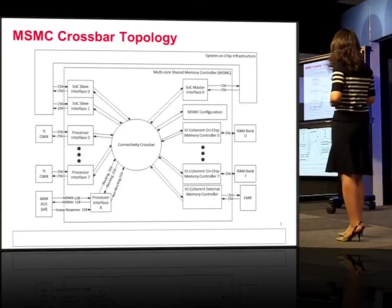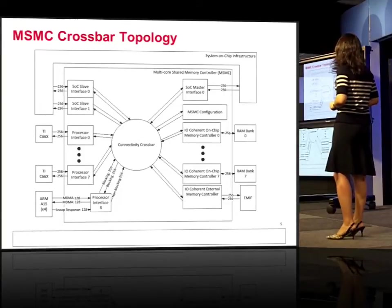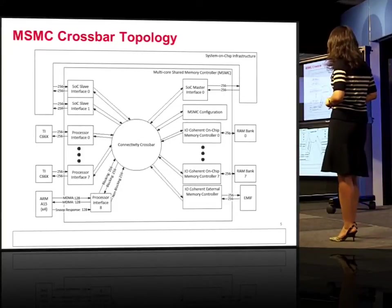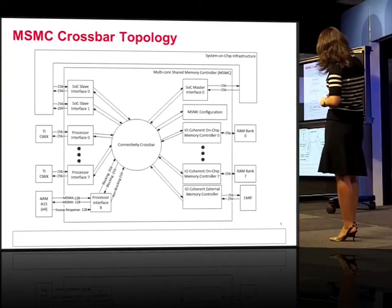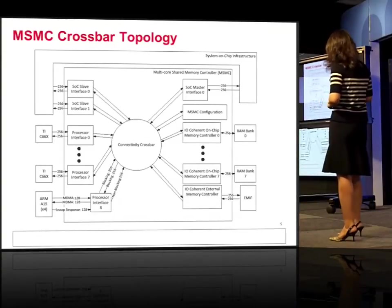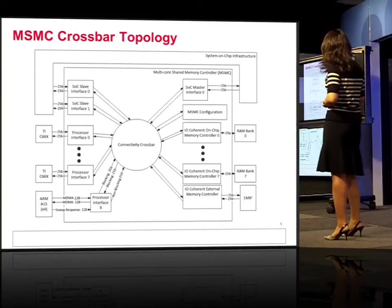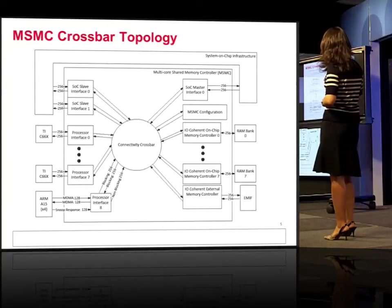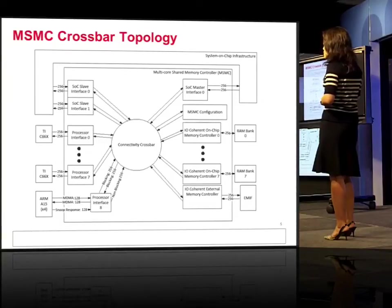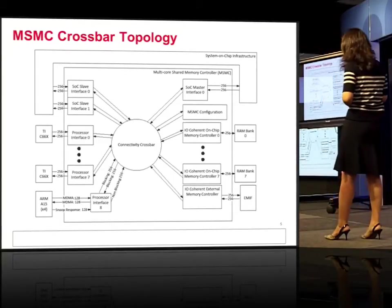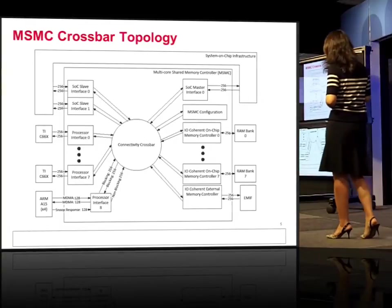This is the overall crossbar topology. On the left side, you can see the SOC processor interface — which is the TI C6X — and each interface has a 256-bit bus running at 1.3 GHz, the same as the CPU frequency.